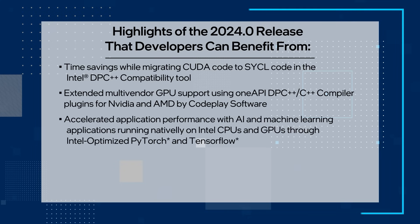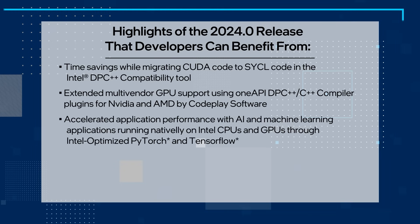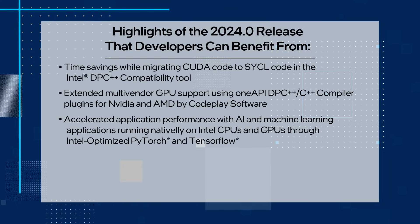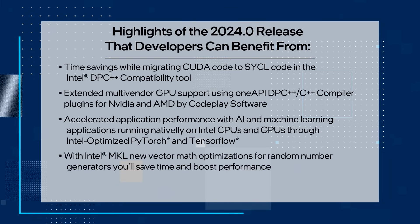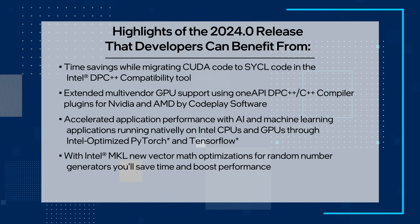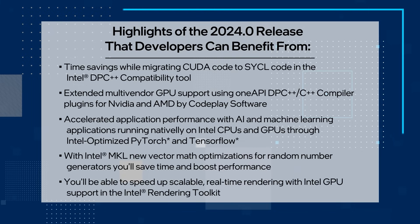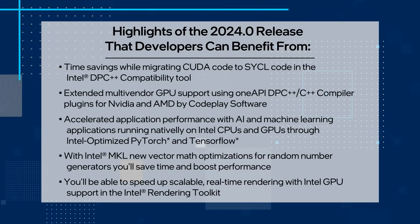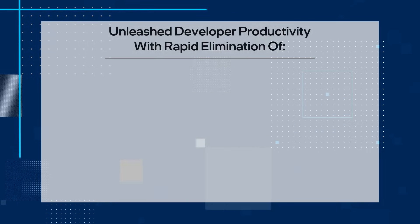You'll also see accelerated application performance with AI and machine learning applications running natively on Intel CPUs and GPUs through Intel-optimized PyTorch and TensorFlow. With Intel MKL, new vector math optimizations for random number generators will save time and boost performance. You'll be able to speed up scalable, real-time rendering with Intel GPU support in the Intel Rendering Toolkit.